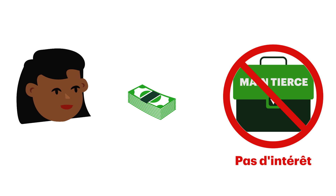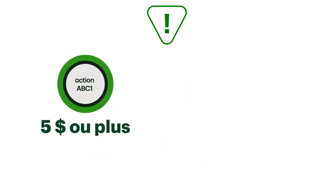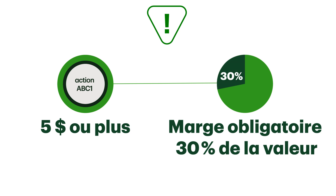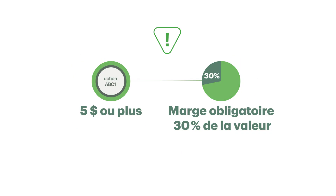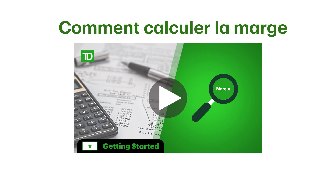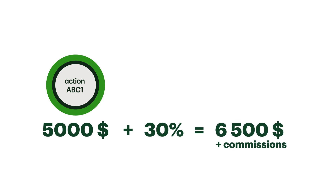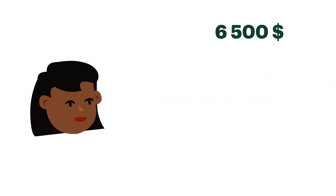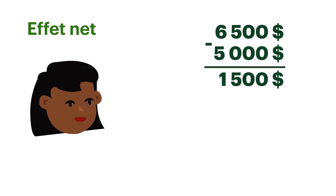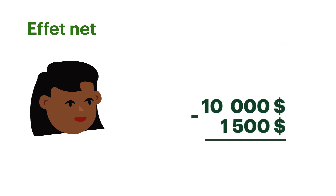You also wouldn't earn any interest on this cash. You still need to put up some of your own capital as collateral. Remember that for most stocks that trade over five dollars, the margin requirement is typically thirty percent of the value. So the margin required for the trade is five thousand dollars plus an additional thirty percent of the trade value, which equals sixty-five hundred dollars plus commission. Since you receive five thousand dollars from the sale, the net impact to your available margin would be a decrease of fifteen hundred dollars.